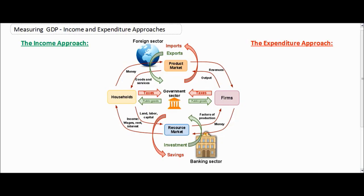Hello everybody. In today's video lecture we're going to be talking a little bit about macroeconomics, specifically the measurement of gross domestic product. In this activity we'll be talking about the circular flow of the nation's economy and we'll discuss the two different ways the nation's GDP can be measured using either the income approach or the expenditure approach. We will apply these two methods for measurement to the circular flow that we see here.